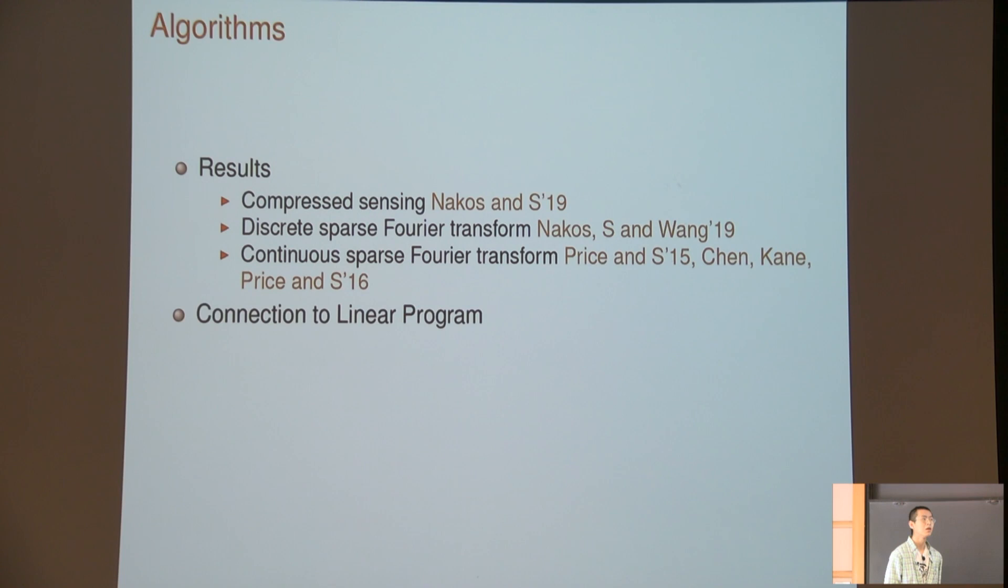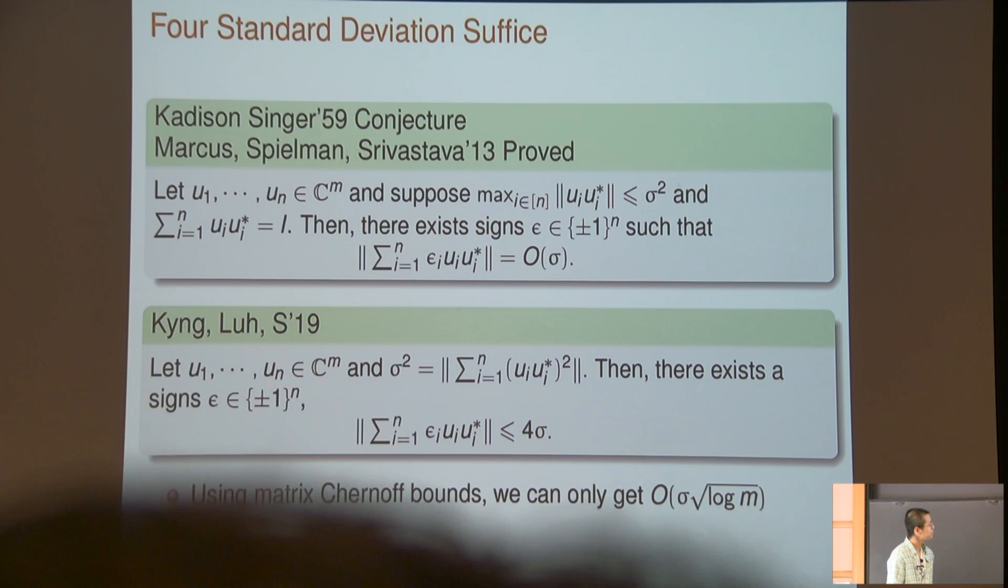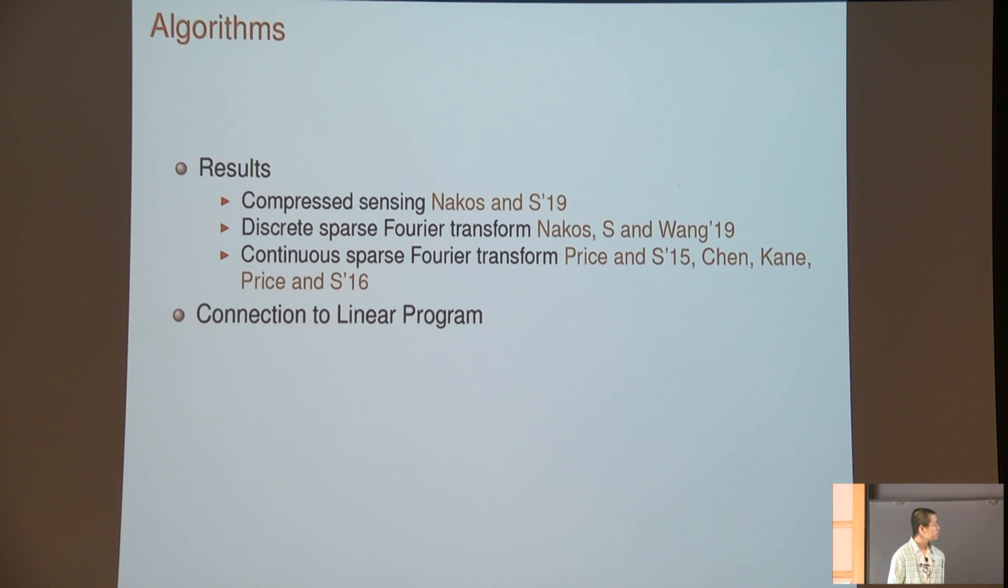I'm also doing some algorithms like compressed sensing and sparse Fourier transform. The nice thing is this is actually related to linear programs recently—I noticed some connection. So the first thing is, in one of my LP papers, the way we speed up LP is we use subsampled Fourier matrices. If you know the literature of sparse recovery, the first method proposed was actually using LP, linear program. And very recently, we noticed that actually if you use sparse recovery, it also can speed up linear programs.